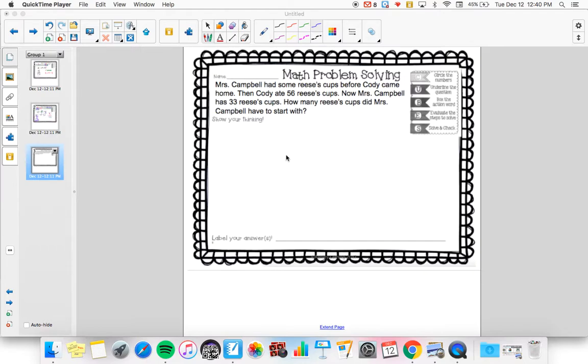This says, Ms. Campbell has some Reese's Cups before Cody came home. Then Cody ate 56 Reese's Cups. Now Ms. Campbell has 33 Reese's Cups. How many Reese's Cups did Ms. Campbell have to start with?